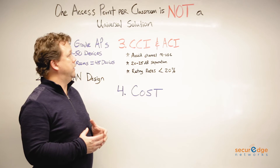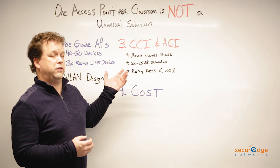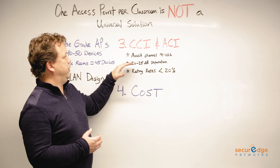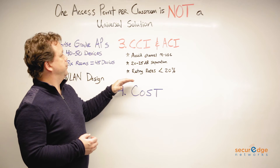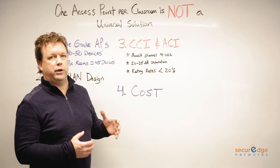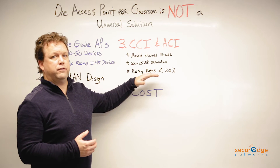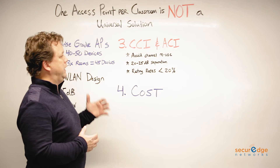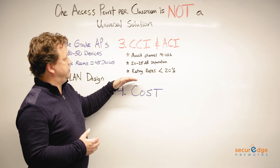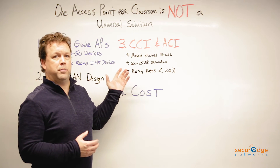Reason number three is CCI and ACI, which stand for co-channel interference and adjacent channel interference. In designing a wireless LAN, we want to avoid channel reuse as much as possible, keep at least 20 to 25 dB of separation between our channels, and keep our retry rates less than 20%. Even with enterprise-grade APs, it's going to be very difficult to achieve all these goals. It really is an example of too much of a good thing being a bad thing.